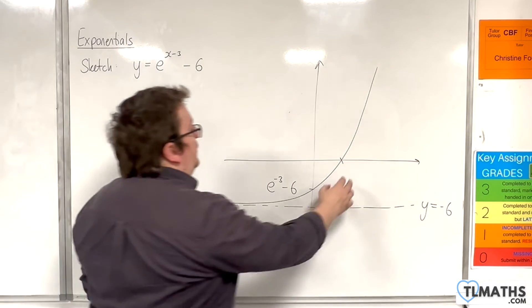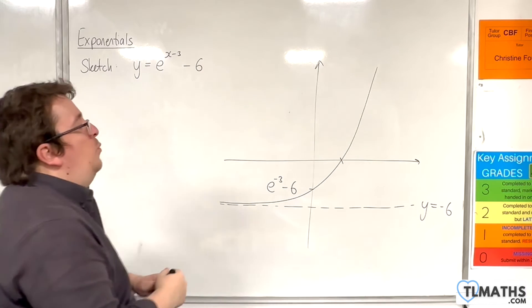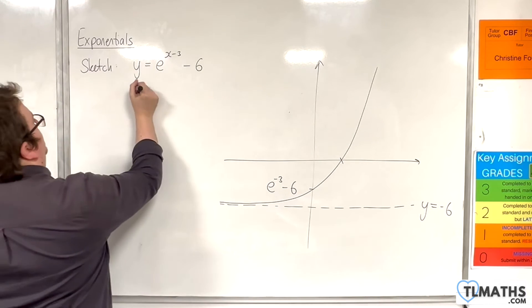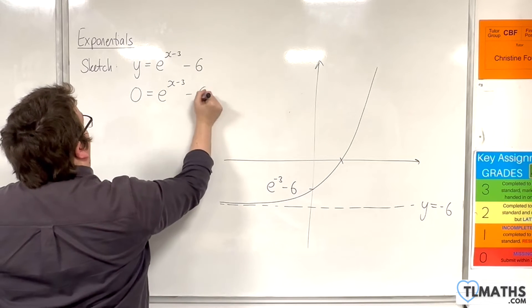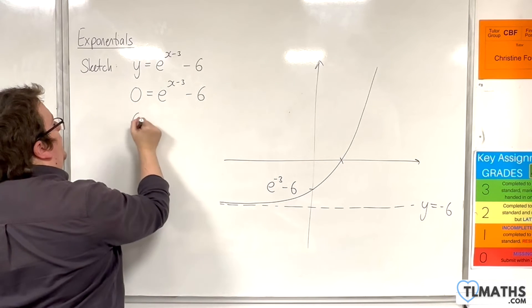Now, where does it cross the x-axis? That is when y is 0. So, 0 equals e to the x, take away 3, take away 6. Add the 6 to both sides.